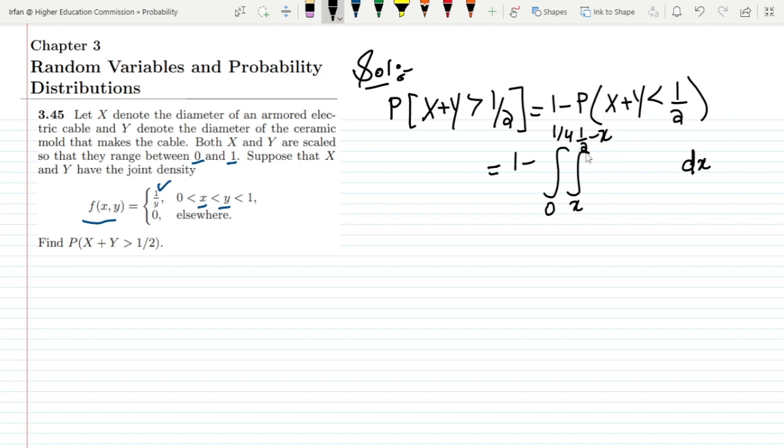I hope you have understood that the summation of both will be less than 1/2. This will be dy. Now writing the value of the function which is 1/y. Let me solve it. Solving it we can easily see that this is 0 to 1/4 and this will be natural log of y.